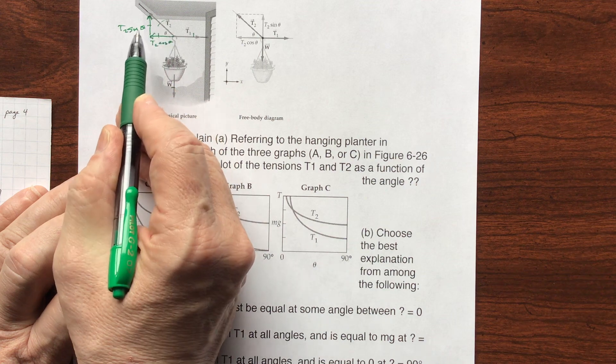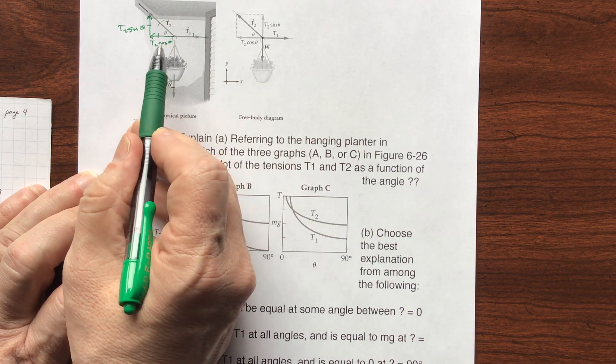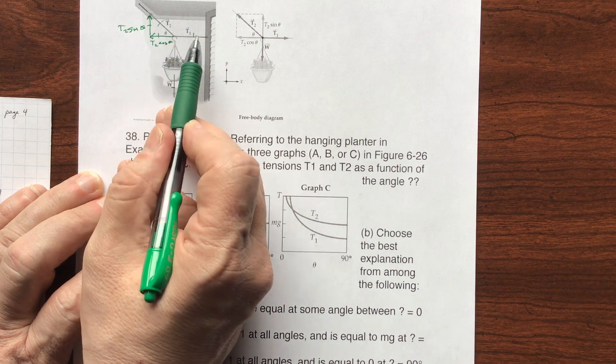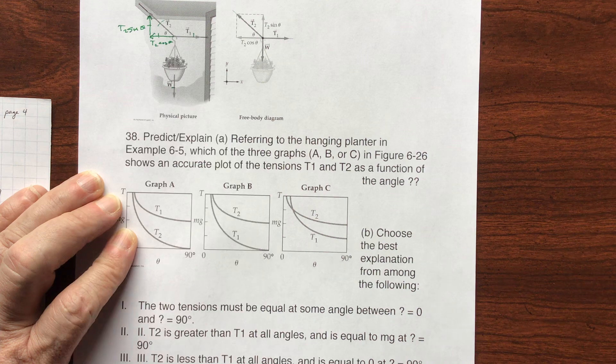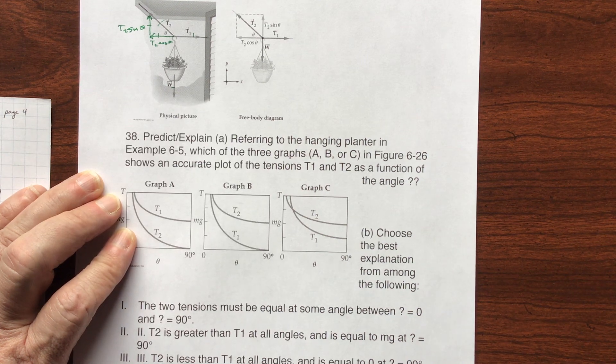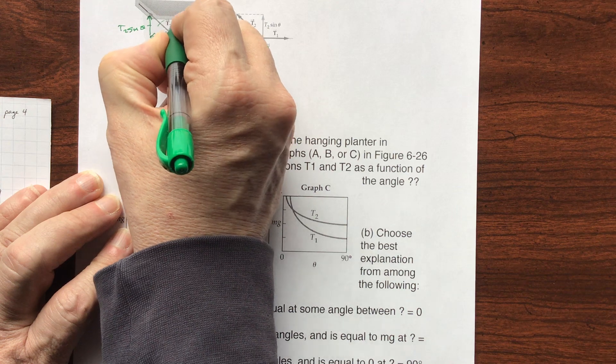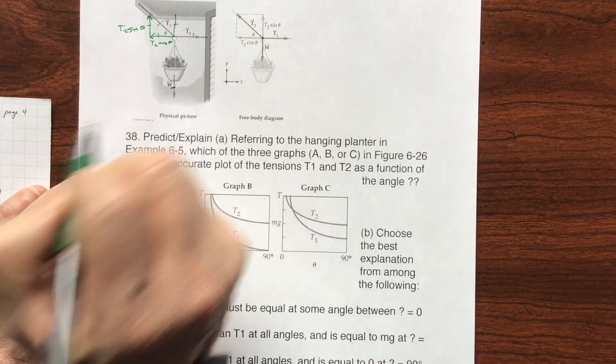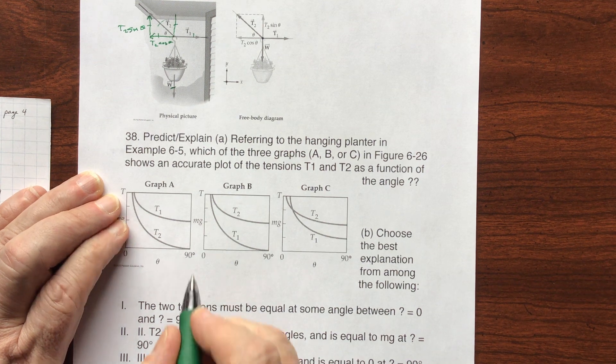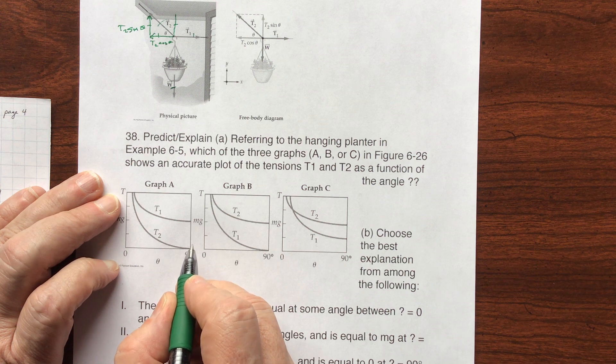The T2 is always going to be supporting the weight of the pot, and T2 cosine of theta is always going to be countering the tension on the wall. So if you're at 90, if you go all the way at 90, do you see that these two things are going to be equal to each other? All right, so what's going to happen? At 90, T2 needs to be supporting all of the weight.